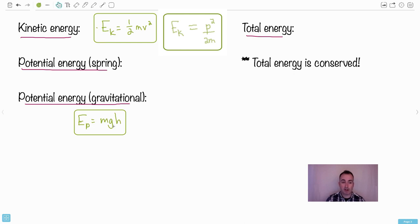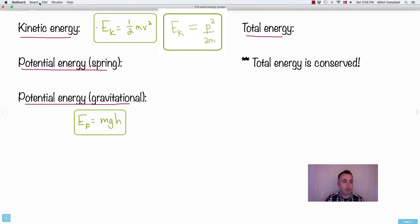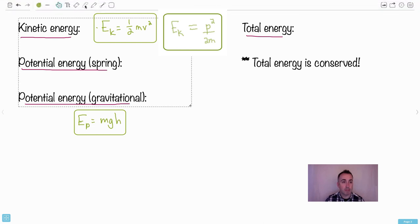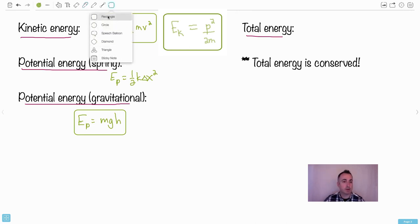You have gravitational potential energy - this is just a special case. But talking about Earth, you can use mgh. Then you have the potential energy of a spring. EP is half K delta x squared. This is what you need for a spring. K is the spring constant, x is displacement from equilibrium.